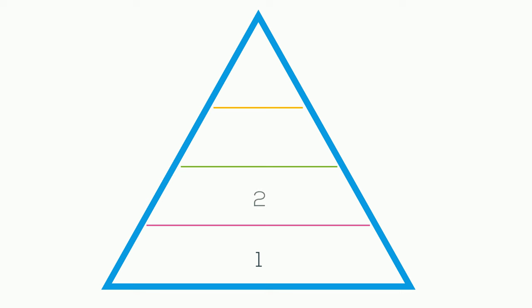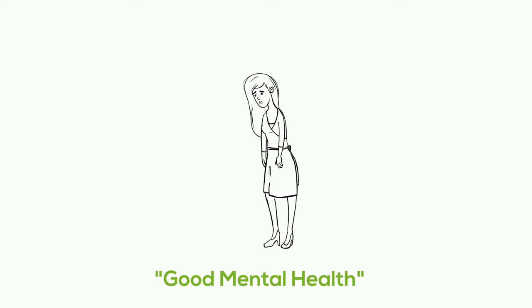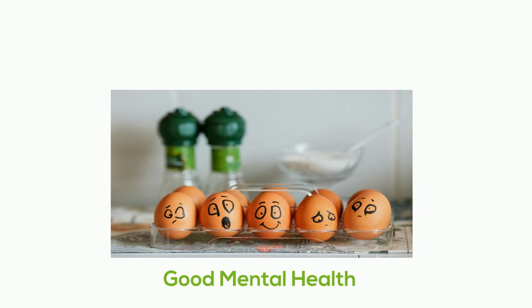All of these levels or components of the pyramid are part of our overall mental health. We need to make sure that we don't define good mental health as never having a bad mood. Good mental health includes a wide variety of emotional states.